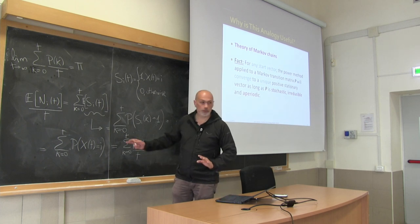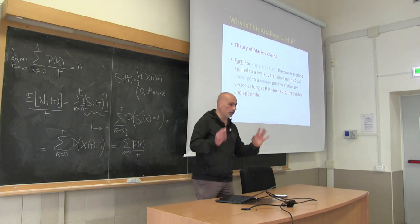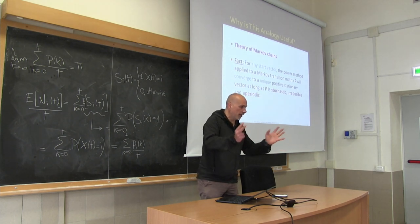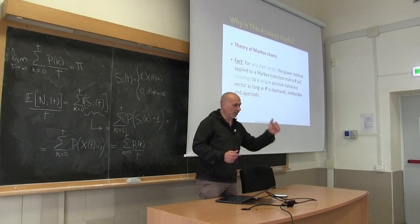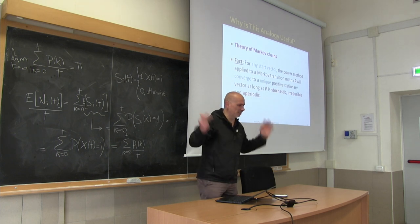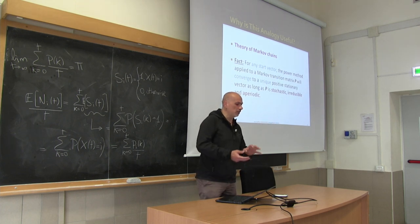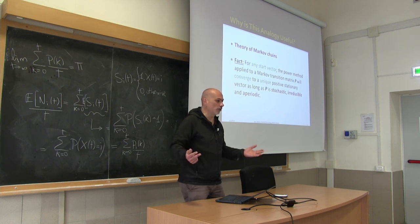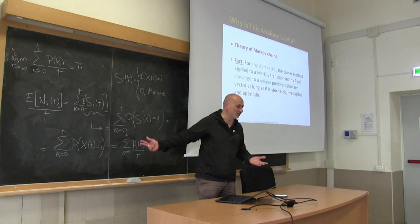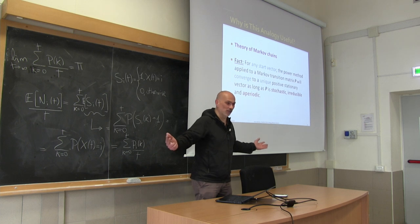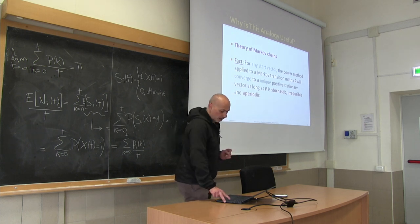At this point we have all the ingredients we want. We take the original web graph — which has dead ends, is not strongly connected, has periodic states — and then we adjust it a little bit. We should not modify it in such a way that the original topology is lost, because otherwise we lose all information. For example, you cannot make it just a complete network. We have to preserve the original information.